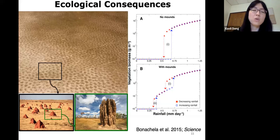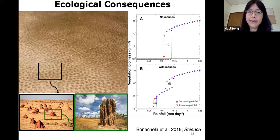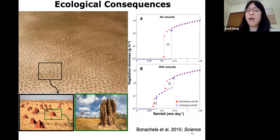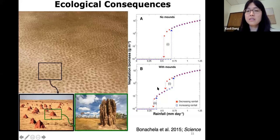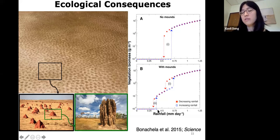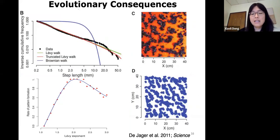Why do we care about these patterns beyond them looking nice and mysterious? There are at least two reasons. First, self-organized patterns have very significant ecological consequences: they change the resilience of the system, the productivity, and the biodiversity. This particular study looks at the resilience of a system with self-organized termite mounds, showing that with this layer of mounds it shifts the threshold of ecosystem collapse to a much lower rainfall value — thereby increasing the resilience of this grassland system to climate change.